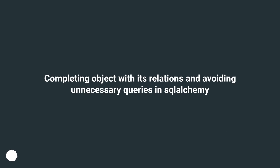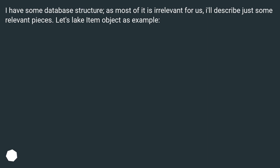Completing object with its relations and avoiding unnecessary queries in SQLAlchemy. I have some database structure; as most of it is irrelevant, I'll describe just some relevant pieces. Let's take the item object as an example.